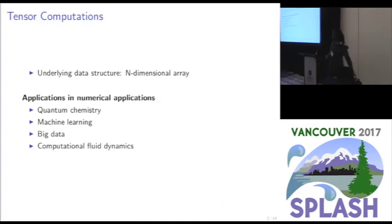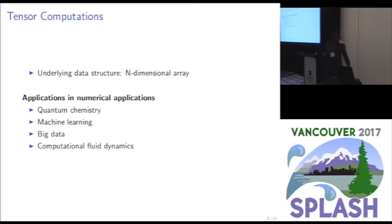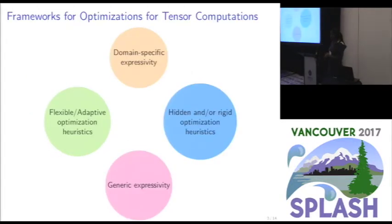Just a quick reminder about tensors: they can be seen as N-dimensional arrays. One of the reasons they are heavily used in numerical applications in domains like quantum chemistry, machine learning, or big data is because the kind of data manipulated in these domains and the operations that occur on them are easily expressed as tensor operations.